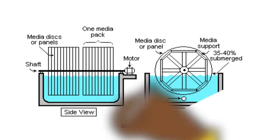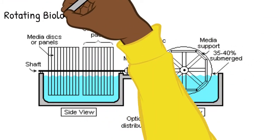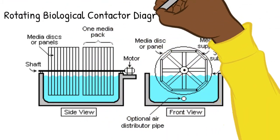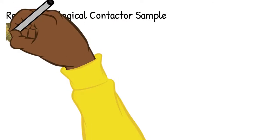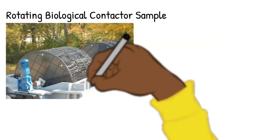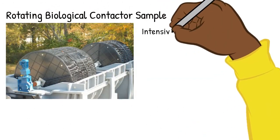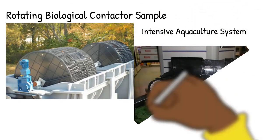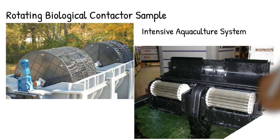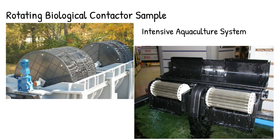Here is a diagram of the rotating biological contactor. Some people also call it a drum filter. One type is used in intensive aquaculture systems, while another version shown in the second photo is used in smaller aquariums.